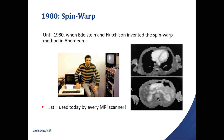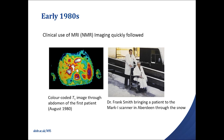Spin-warp completely revolutionised MRI as a clinical tool because it's a technique that allows you to get rid of the artifact that had completely ruined the image. Suddenly you could get really beautiful images of cross sections of the body. Spin-warp is still used on every MRI scanner in the world today. As soon as that technique was developed, it completely unlocked the use of MRI. Here's a picture of Frank Smith bringing a patient to that original scanner through the snow in Aberdeen — at this point the scanner was in a basement and doctors had to bring their patients across, through the snow, to get scans done.